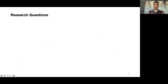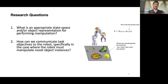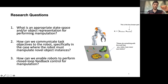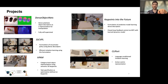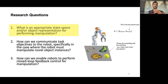This leads to three research questions: What's an appropriate state space and object representation for manipulation? How can we communicate task objectives to the robot, specifically when it must manipulate novel objects? And how can we enable robots to perform closed-loop feedback control for manipulation? I'll come back to these throughout the talk. First, I want to talk about Dense Object Nets — I'll keep it brief and high level. This work is a few years old, but it is the foundation for the other papers.